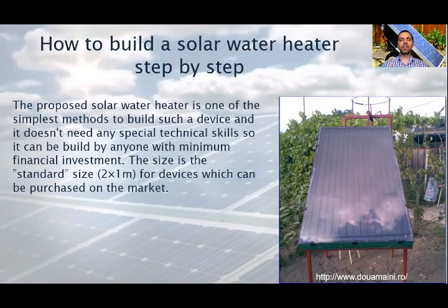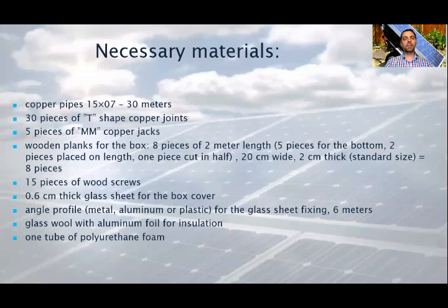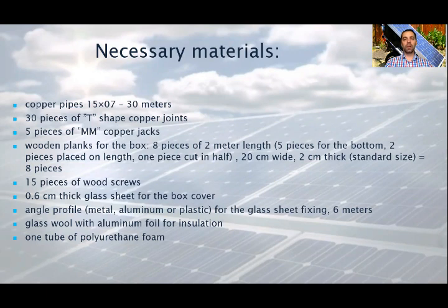In the first few minutes, we will see how we can build a solar water heater step by step. The solar water heater shown on this slide is one of the simplest devices, and it doesn't need any special technical skills, so it can be built by anyone with minimum financial investment. The size is the standard size, 2x1 meter, the same as other devices which can be purchased on the market. On this slide, you can see the necessary materials for building it. First, you need to buy approximately 30 meters of copper pipes, 30 pieces of T-shaped copper joints, and 5 pieces of copper jacks.